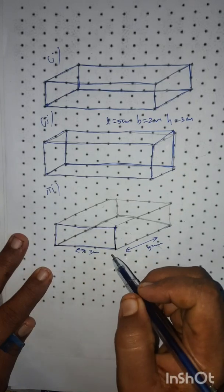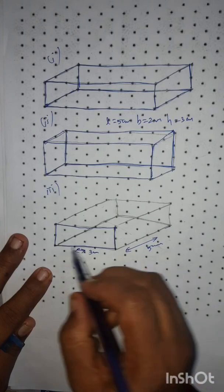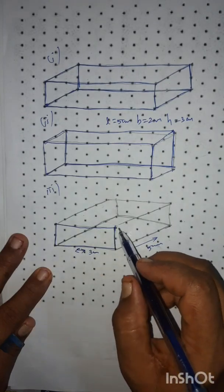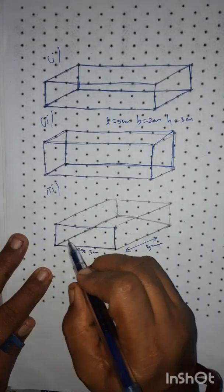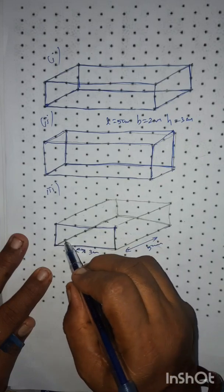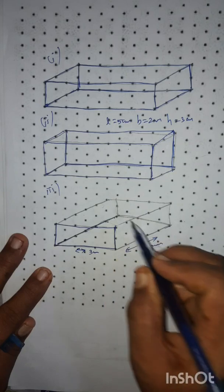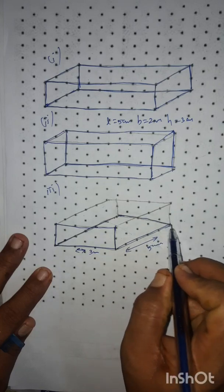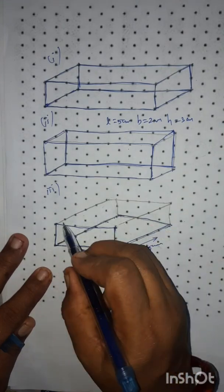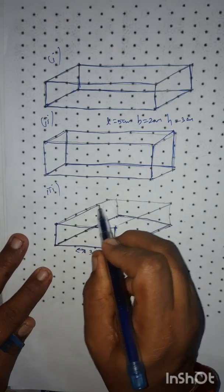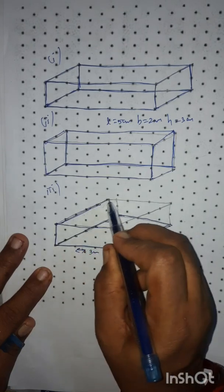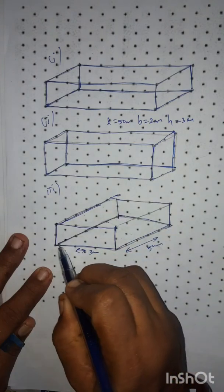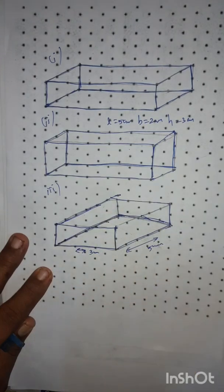The third type uses the same dimensions but the rectangle is arranged a little differently — a different diagram. After finishing this, you count 1, 2, 3, 4, 5 along each direction. Complete like this and you will get another type of the cuboid.